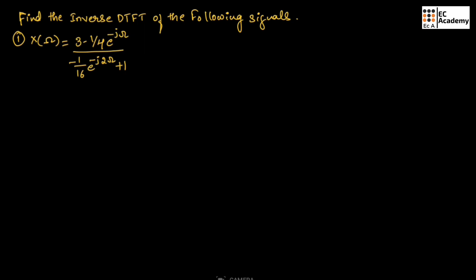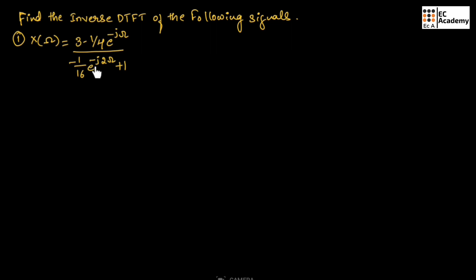Here, we need to find the inverse DTFT of the following signal, where X(ω) is given as 3 minus 1/4 · e^(−jω) divided by minus 1/16 · e^(−j2ω) plus 1.